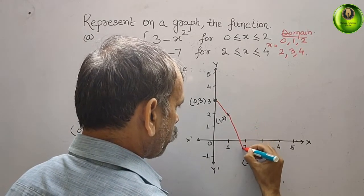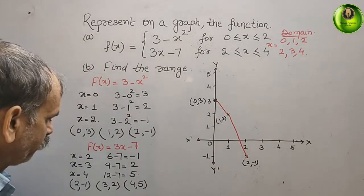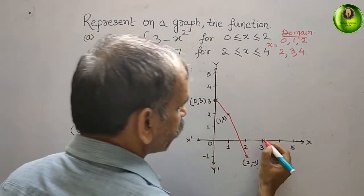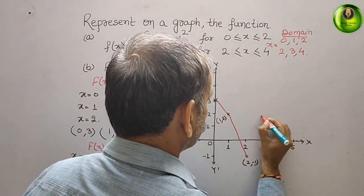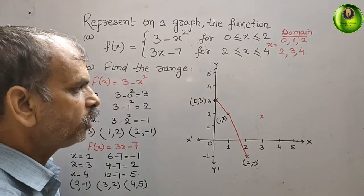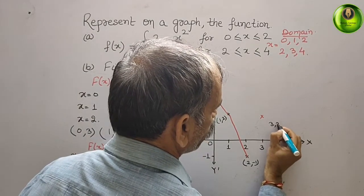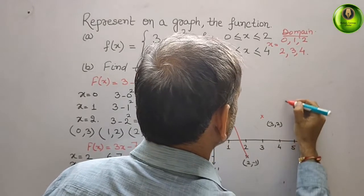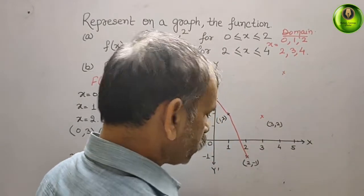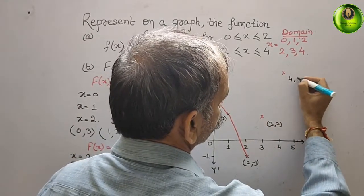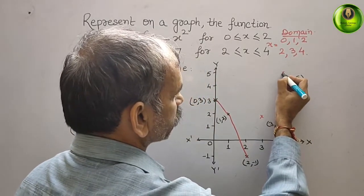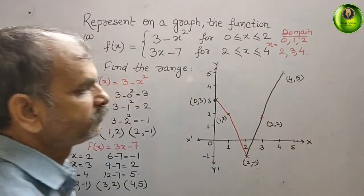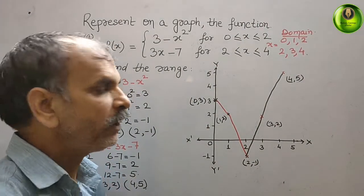For the second function: (2, −1) is the same point shared. Then (3, 2): x = 3 is here and y = 2 is here, so the point comes here — that is (3, 2). Next, (4, 5): x = 4 is here and 5 comes at the top, so this is (4, 5). Now just join these points and the graph comes out like this.